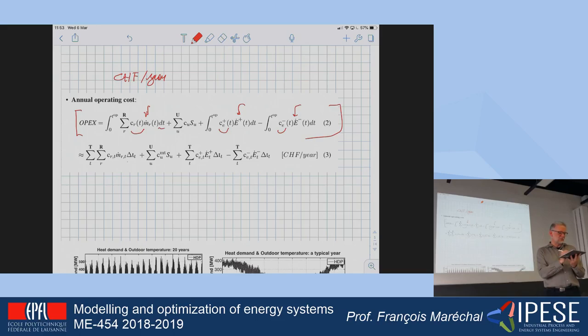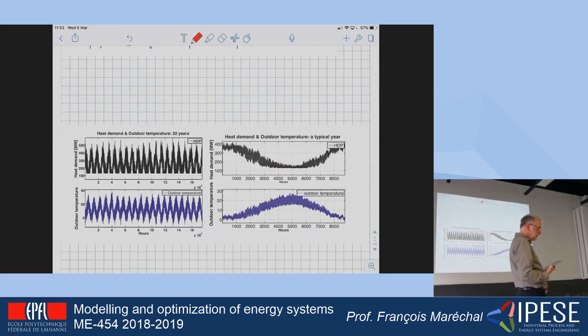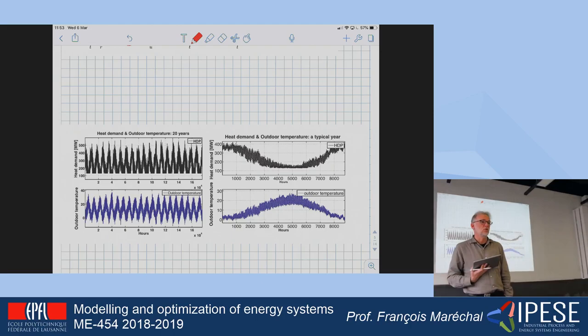Instead of a continuous integral with dt, I will use a discrete sum with delta t, for example each hour. Something that becomes even more tricky is that in reality I'm going to buy my energy system for 20 years, so I have to calculate 20 years of operation to know what is the operating cost of my system.